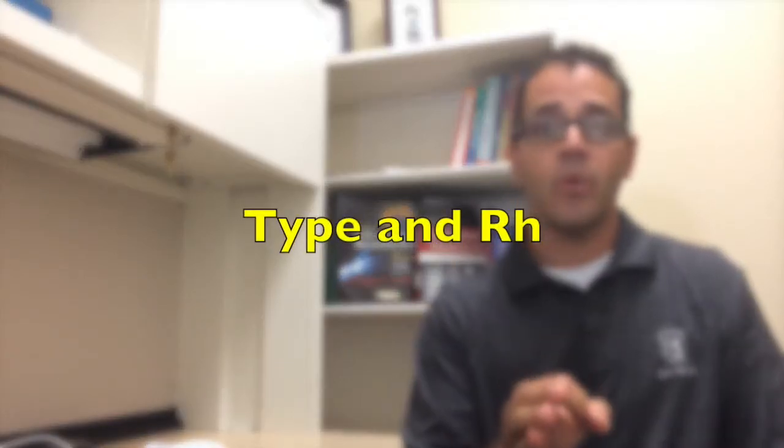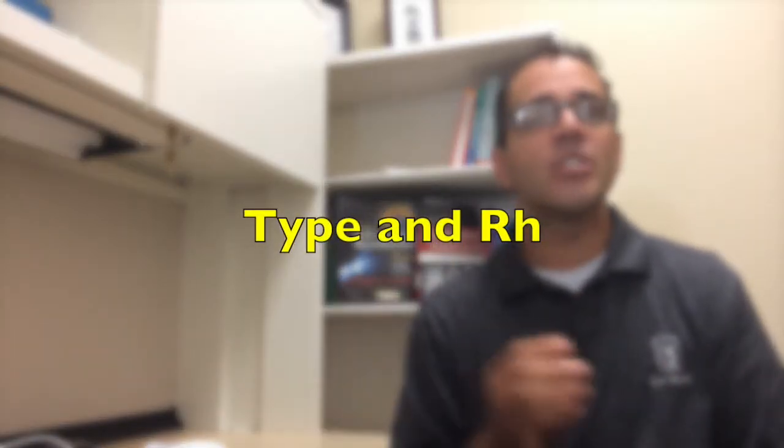Before you order, this is very important, a type and RH, check PCI under the tab that says blood bank to see if the patient already has one of these in the system. This saves time and money.